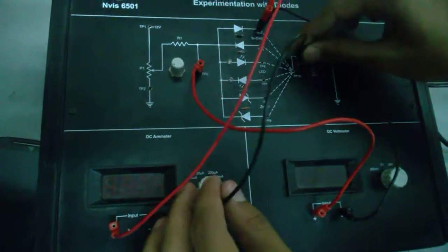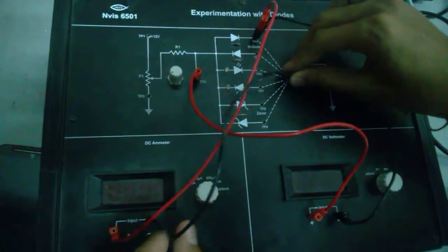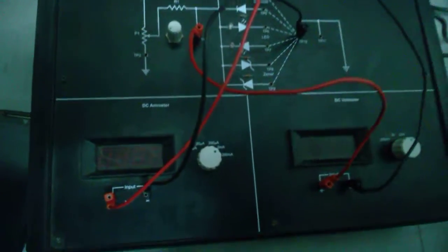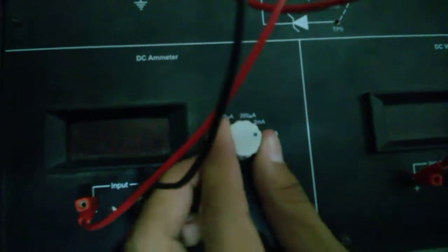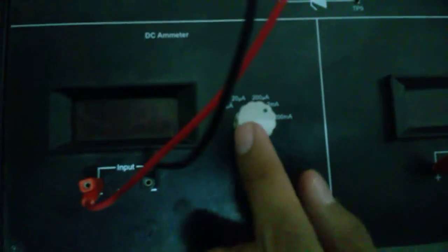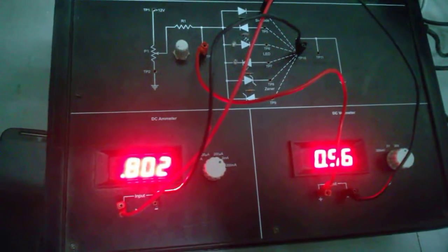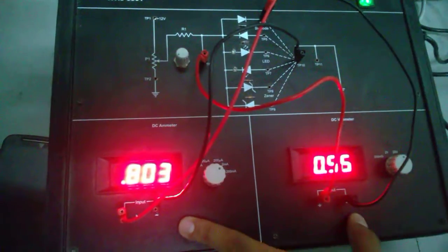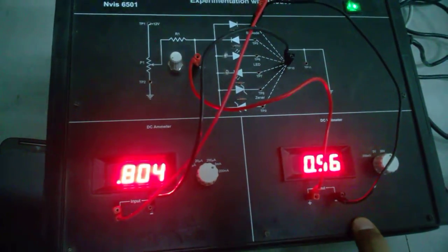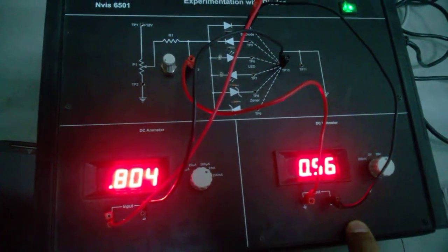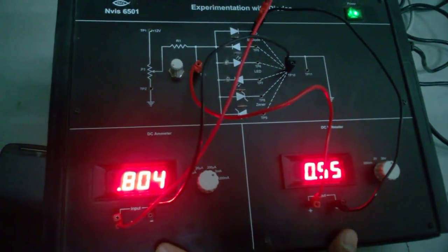Now as we know that in forward bias we are calculating the current in milliamperes. So I have set it on milliamperes and now I just give the power to the voltmeter. And here it is our current and the voltage, cut in voltage of the forward bias PN junction silicon diode.